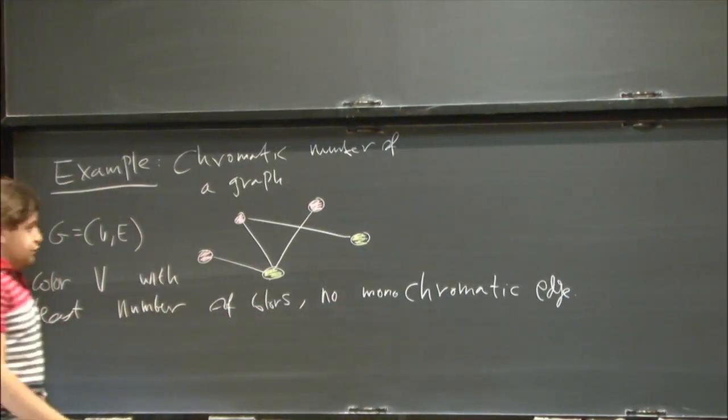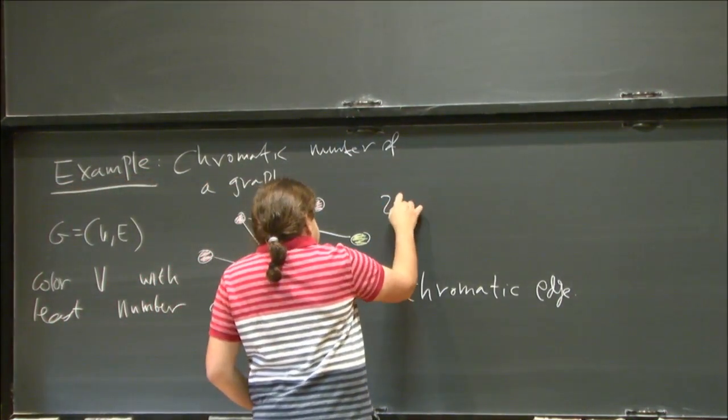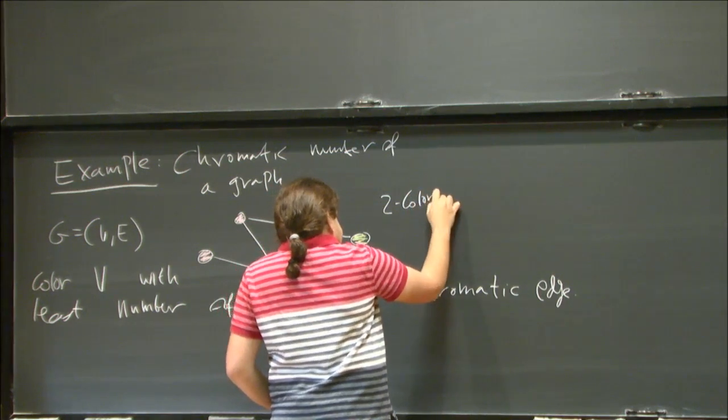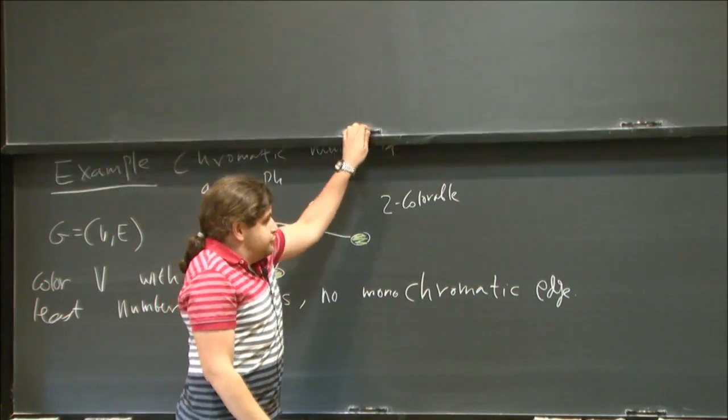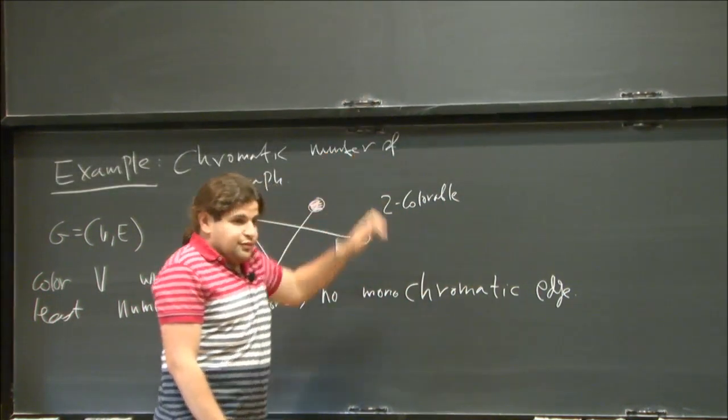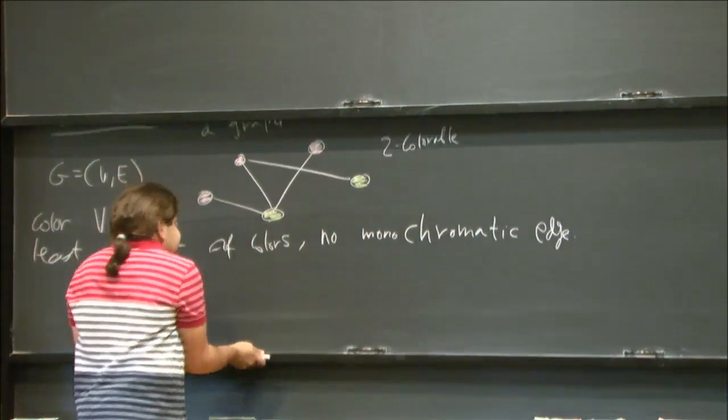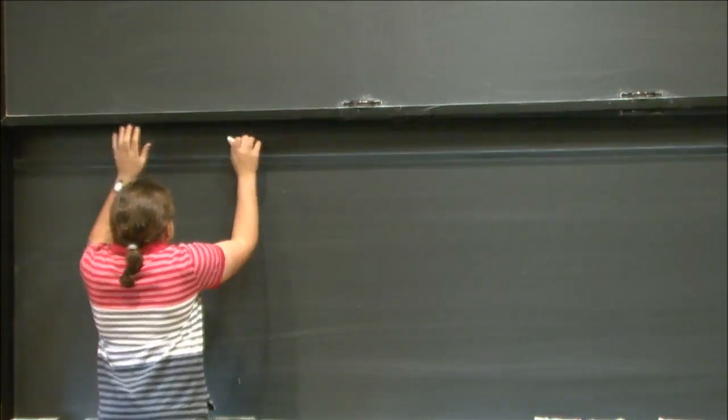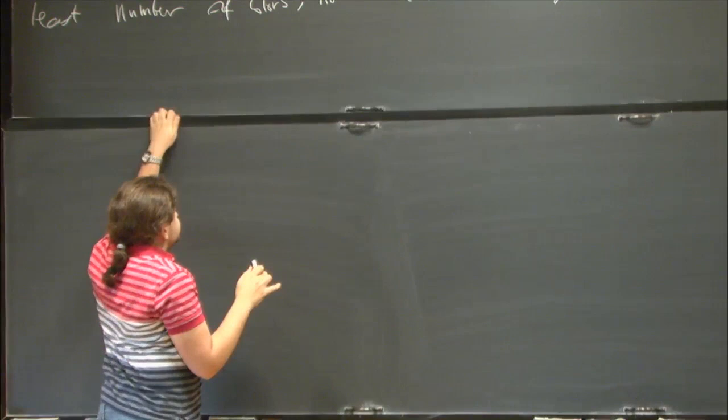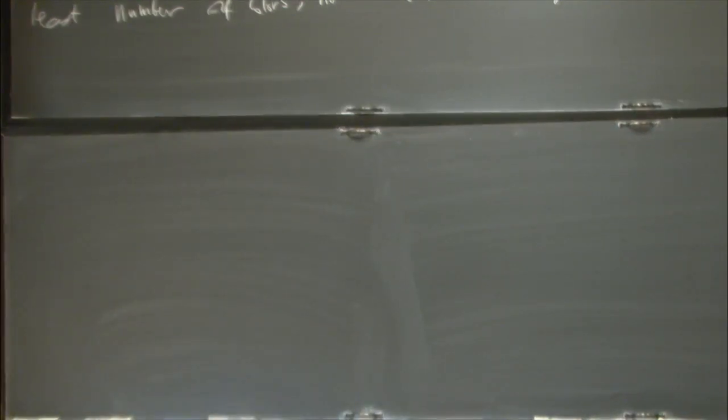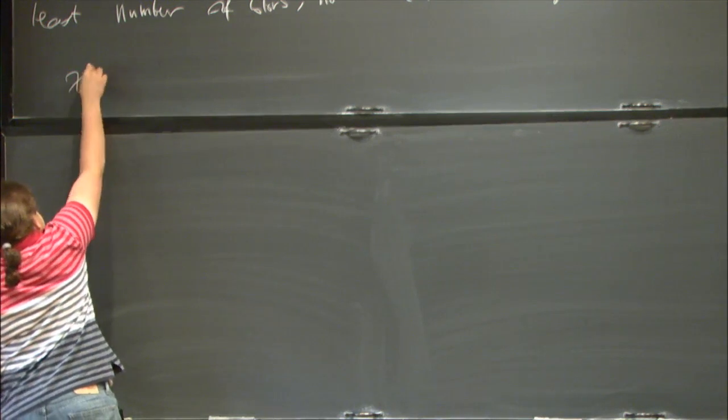So, this is a two-color graph. Okay? So, what is the problem? I give you a graph, and I ask you, please compute the chromatic number of this graph.